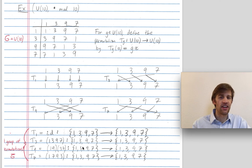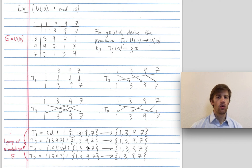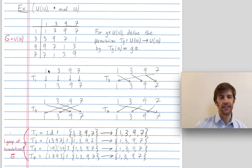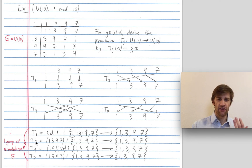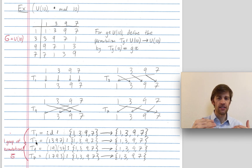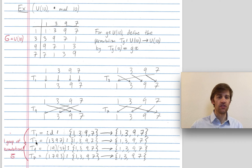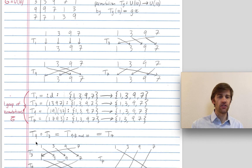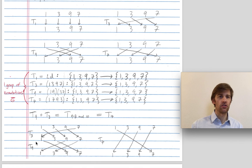These are all permutations of the elements of my group — they permute the numbers 1, 3, 9, and 7. We are going to prove that this map from G to G-bar that sends an element like 3 to T3 is an isomorphism. It's clearly a bijection, right? The elements 1, 3, 9, and 7 map bijectively onto T1, T3, T9, and T7. Not every bijection is an isomorphism — you also need to preserve the group structure. We'll do this in general, but let me show you what preserving the group structure looks like here.